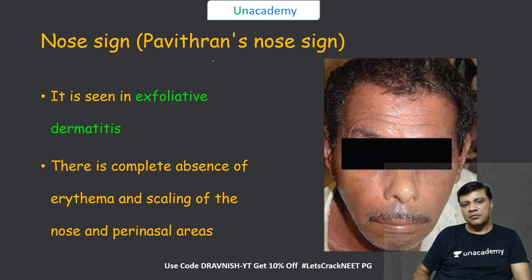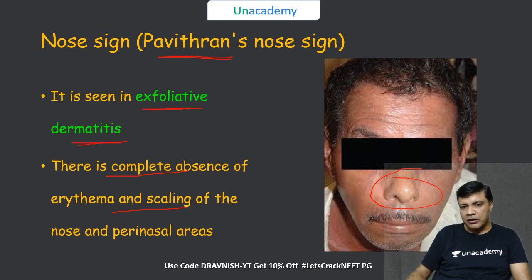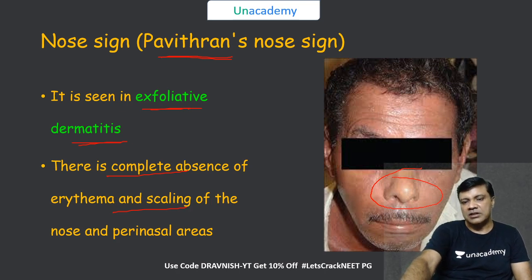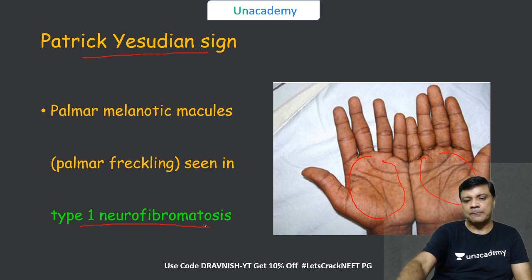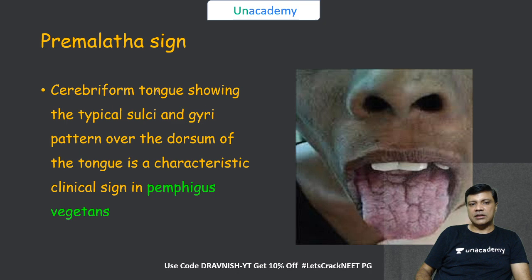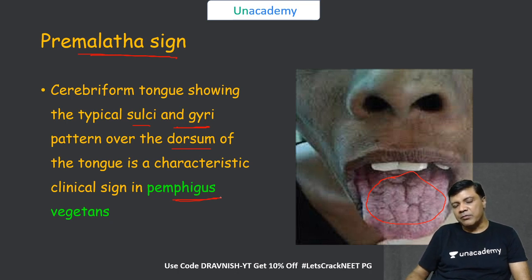Three signs are named after Indian dermatologists. The Pavitran nose sign, a feature of exfoliative dermatitis, is the complete absence of erythema and scaling over the nose and perinasal area despite generalized erythroderma. The Patrick Yesudian sign is characterized by palmar melanotic macules in patients with neurofibromatosis 1. The Premlata sign is characterized by a cerebriform tongue — showing typical sulci and gyri on the dorsum — and is a characteristic feature of pemphigus vegetans, a variant of pemphigus vulgaris.